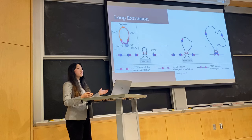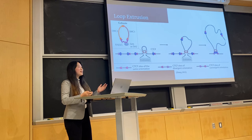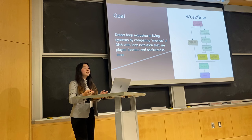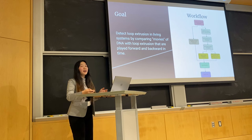We know that loop extrusion is essential for ensuring genomic stability, regulating gene expression, and maintaining various cellular processes. However, the exact function of loop extrusion is not very well known, in part because live imaging of loop extrusion has not yet been done in vivo. So the fundamental goal of my project is to detect the presence of these loops inside living systems, and the method I'm using is by taking movies of DNA trajectories and looking at them both forward and backwards in time.